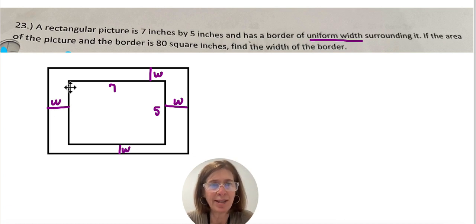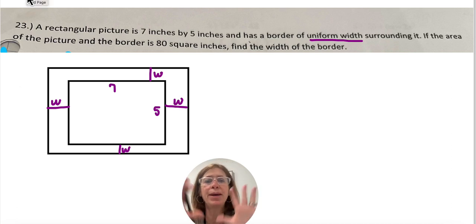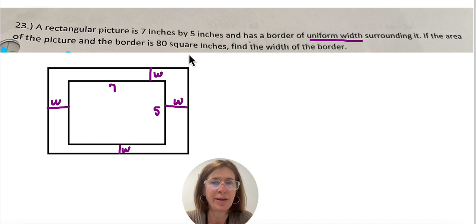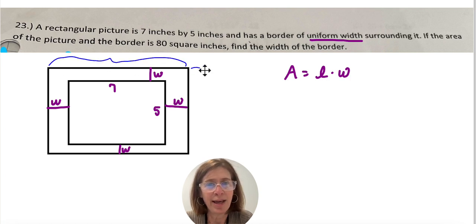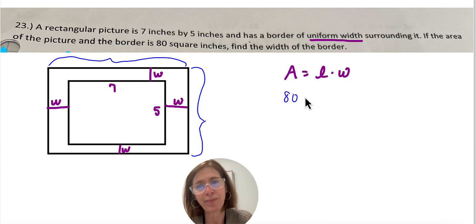Now then they tell us that the area of the entire thing, so the big rectangle, is 80. And I know that area equals length times width. So I actually need this length and this width. And I know that when I multiply them, I'm going to get 80.